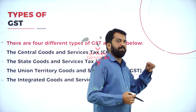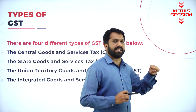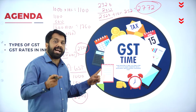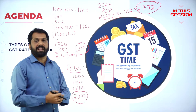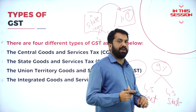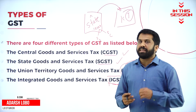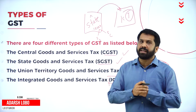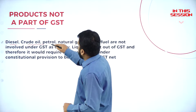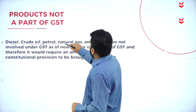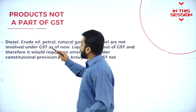Why do we call it a Union Territory? Because it is under the rule of the President. What is double taxation? Tax calculated on tax is called double taxation. IGST stands for any sales that happen between two states — we calculate GST under the IGST head. Crude oil, petrol, natural gas, and jet fuel are not involved under GST.